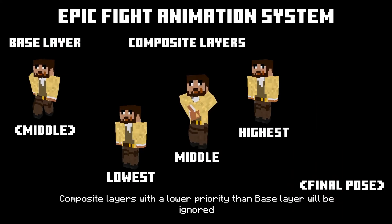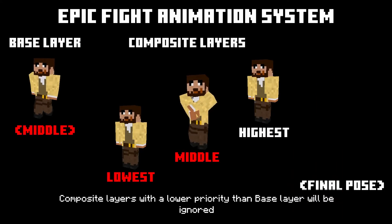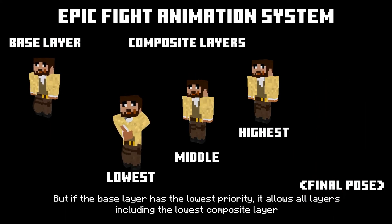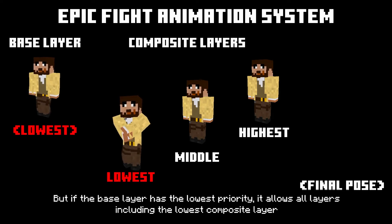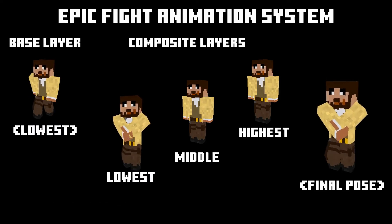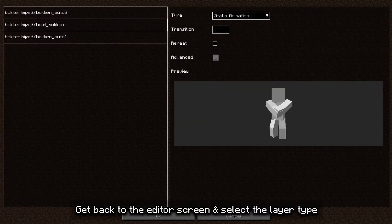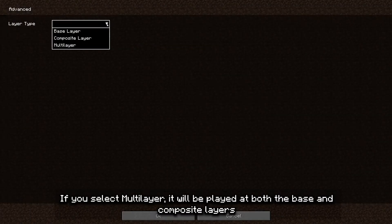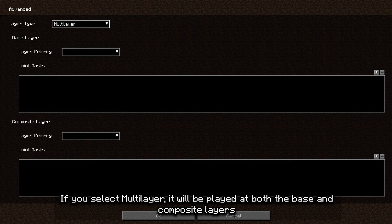Composite layers with a lower priority than the base layer will be ignored. But if the base layer has the lowest priority, it allows all layers including the lowest composite layer. Back to the editor screen — select the layer type. If you select multi-layer, it will be played at both the base and composite layers.